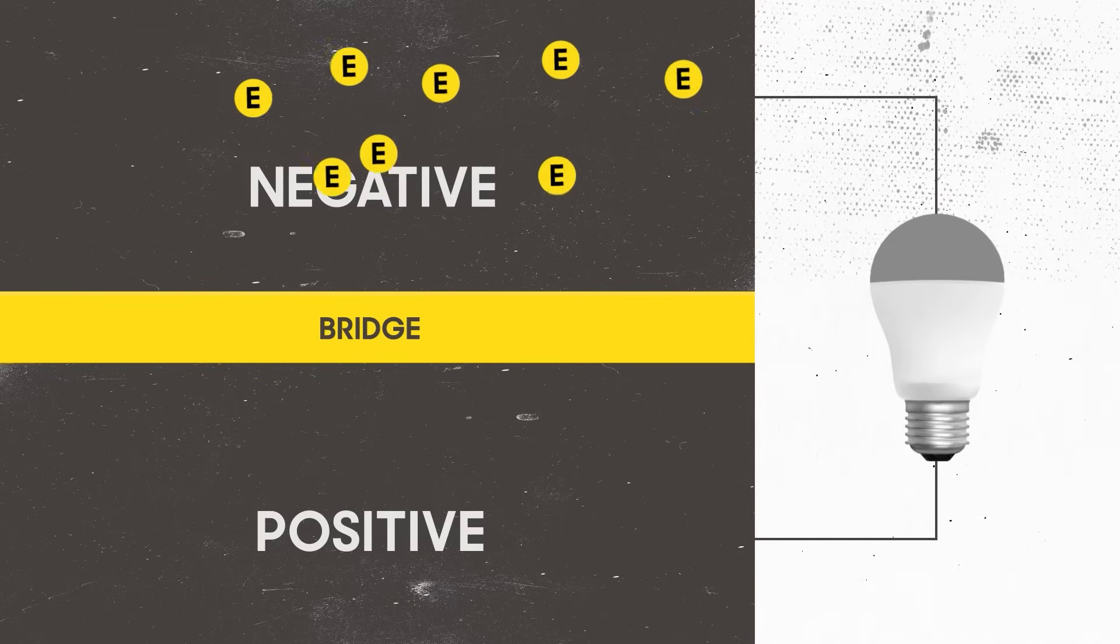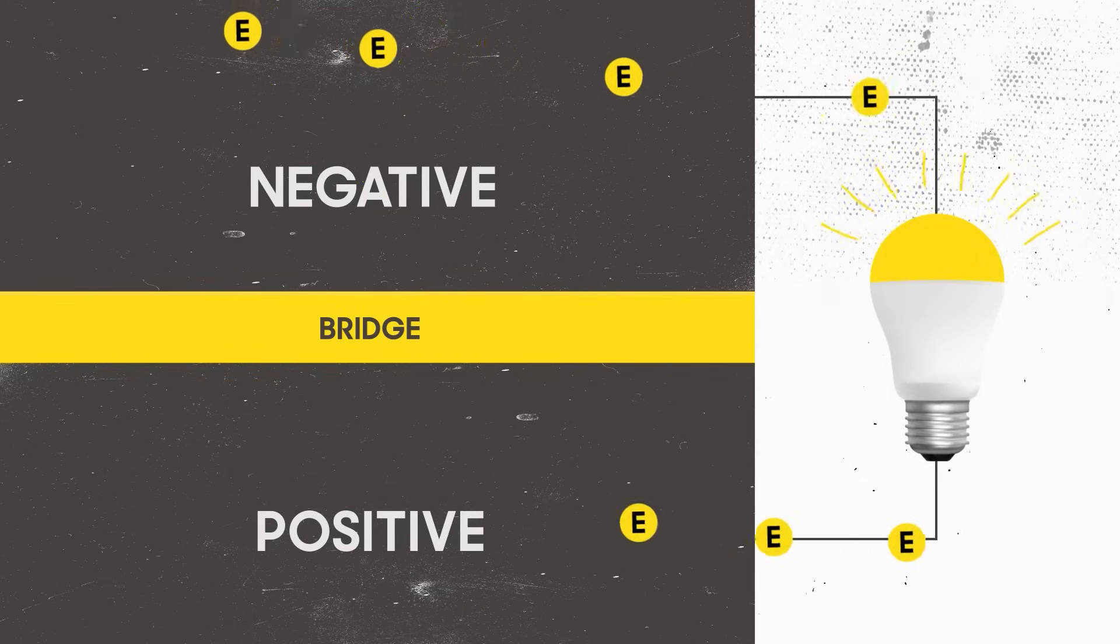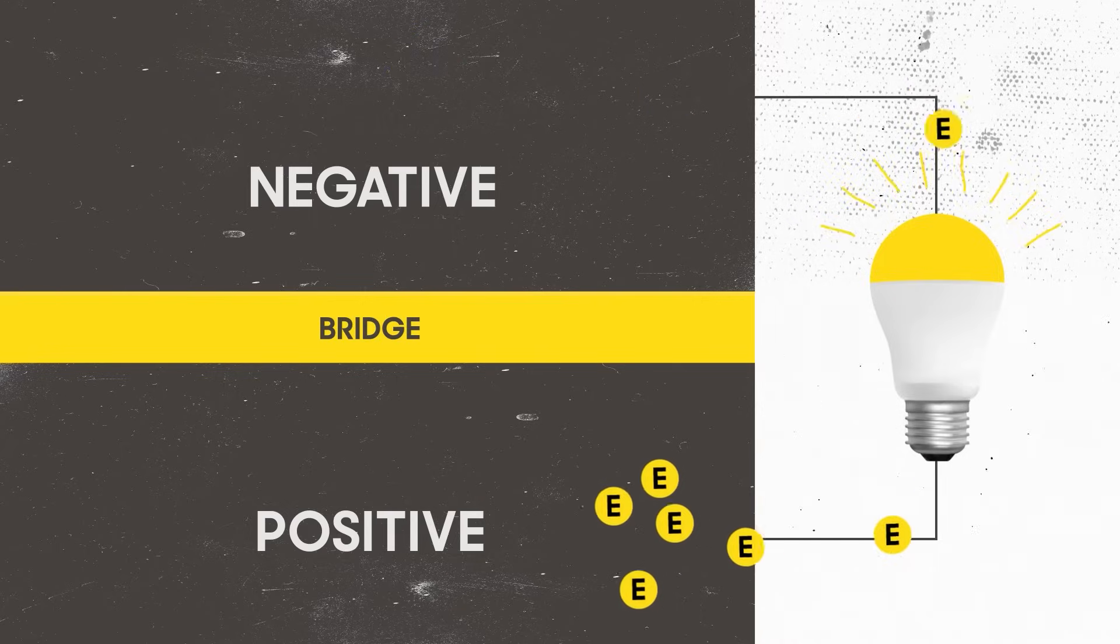So instead, the electrons are collected by conductive metal plates that move them from the solar cell into a circuit where they flow freely as electricity.